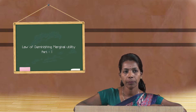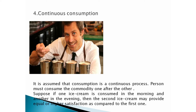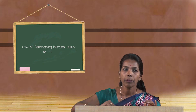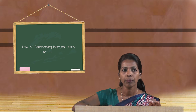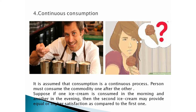The fourth assumption is continuous consumption — it is assumed that consumption of a commodity is a continuous process, and the person must consume the commodity one after the other. For example, if one ice cream is consumed in the morning and another in the evening, the second may provide equal or higher satisfaction than the first. Therefore, there must be continuous consumption.